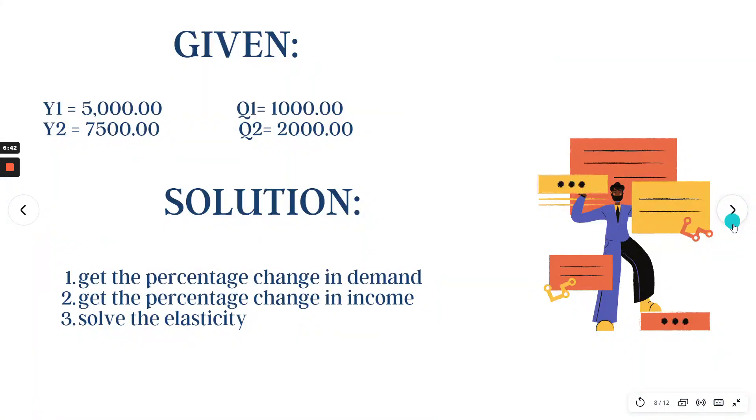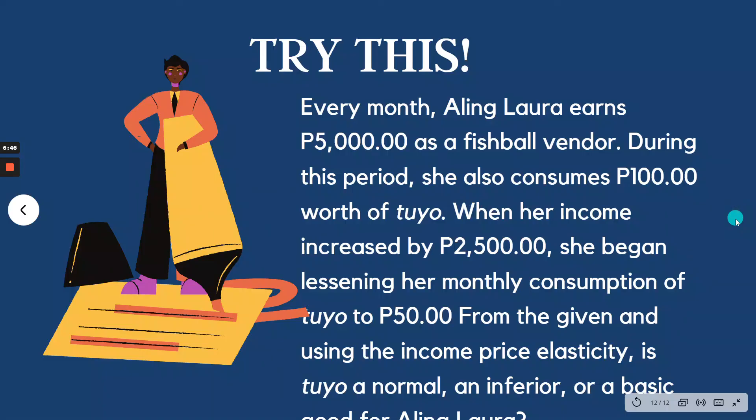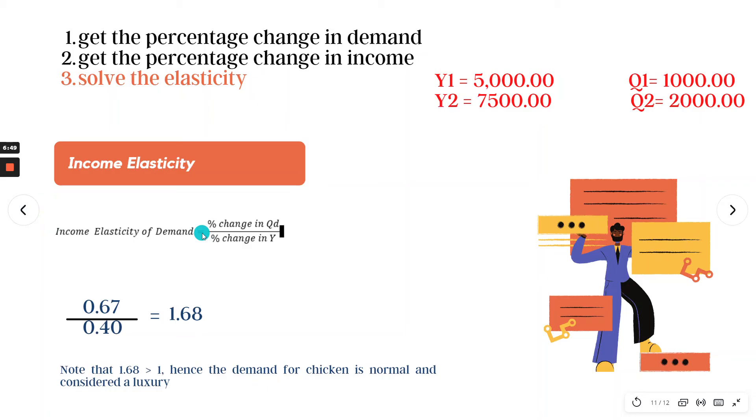Luxury for her, she has more than enough chicken. Meaning, once her income improved, her income increased, her consumption also increased.